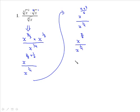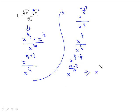Now we're dividing powers, and as you know, when you divide powers you subtract the exponents. So 7 over 6 minus 1 over 4. We need a common denominator — in this case it's going to be 12. When we multiply 7 over 6 by 2 we get 14 over 12, and 1 over 4 times 3 is 3 over 12. This finally leaves us with x to the 11 over 12.